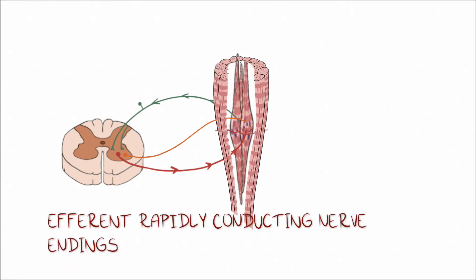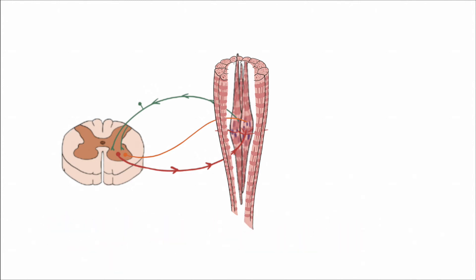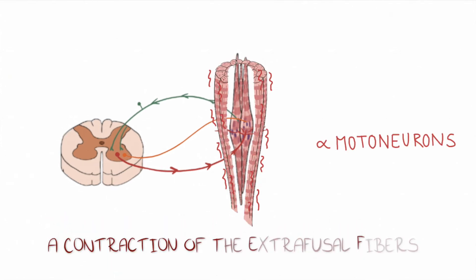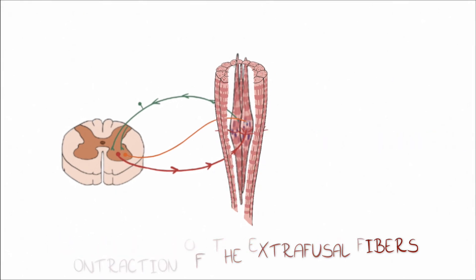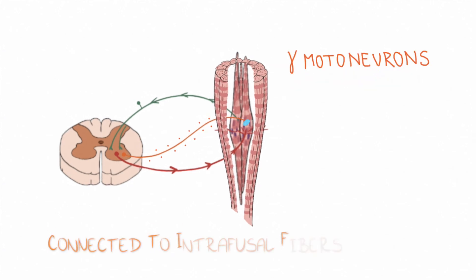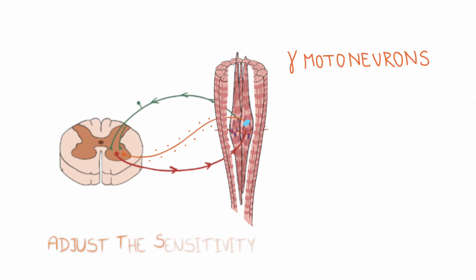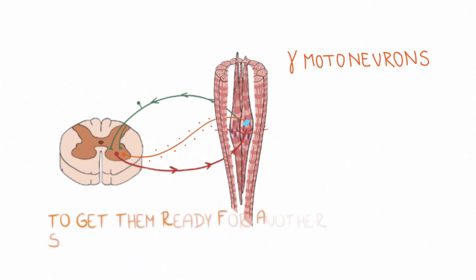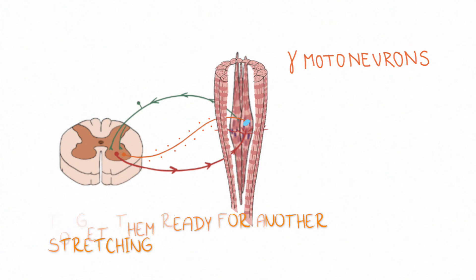Efferent rapidly conducting nerve endings of an alpha motoneuron cause a contraction of the extrafusal skeletal fibers around the spindle. Stimulation involves gamma motoneurons as well. They are connected to intrafusal fibers and function to adjust the sensitivity of the muscle spindle, contracting them to get them ready for another stretching.